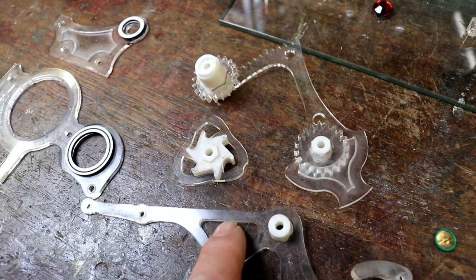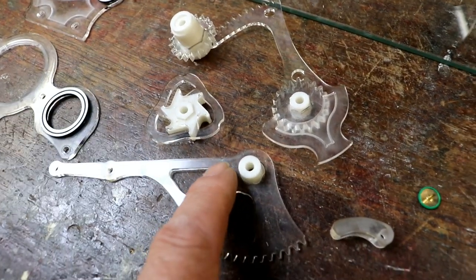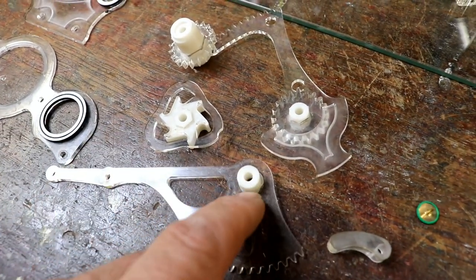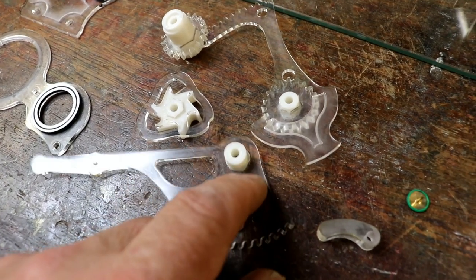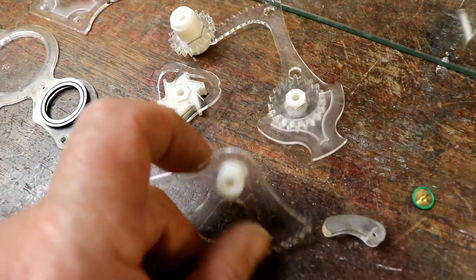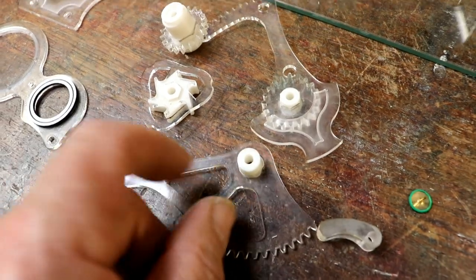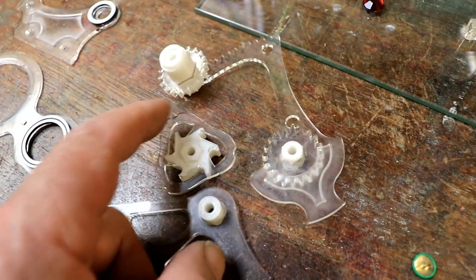They only fit into one particular gear so you can't get them mixed up. You just put droplets of glue around the bottom, superglue, then push the top bit, the acrylic, down. It sticks perfectly with no glue anywhere. It is an absolute joy.